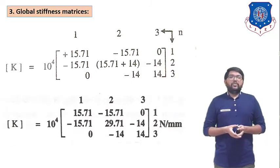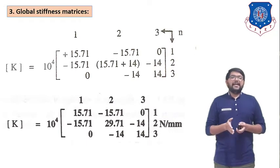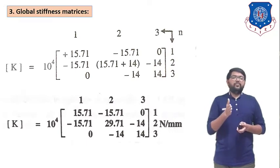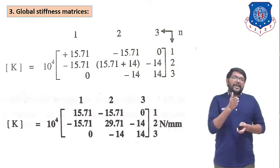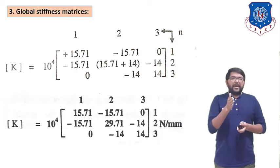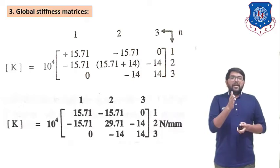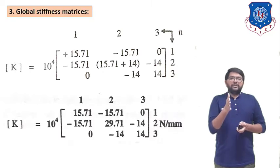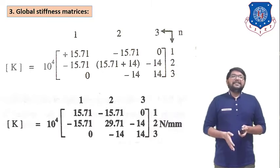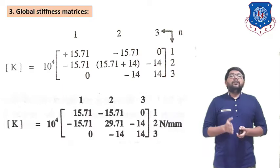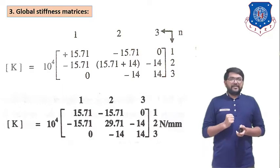The global stiffness matrix is K = 10⁴ × [15.71, -15.71, 0; -15.71, 29.71, -14; 0, -14, 14] N/mm. Now we identify the global load vector — how much force is applied at each node.